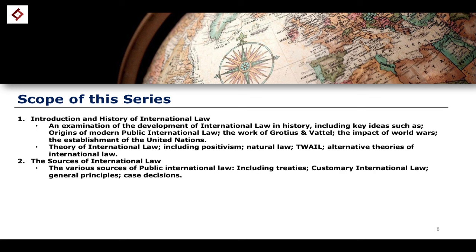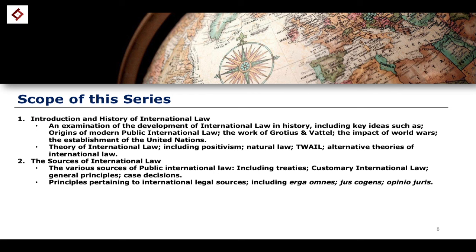The second topic will focus on the formal sources of international law — where public international law comes from. This involves an introductory look at the law of treaties, an examination of custom or customary international law, as well as general principles and case decisions. We'll also consider key principles pertaining to international legal sources, such as the doctrines of Erga Omnes, Jus Cogens, and Opinio Juris — all important for those studying international law.